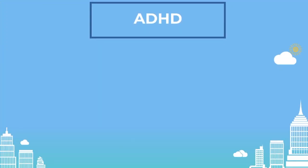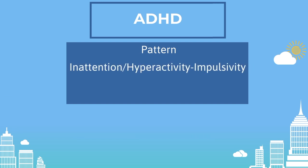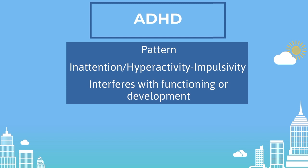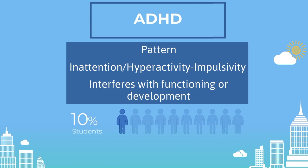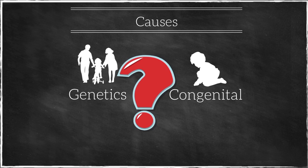First, let's take a look at ADHD. ADHD is defined by the American Psychiatric Association as a persistent pattern of inattention or hyperactivity-impulsivity that interferes with functioning or development. According to the Centers for Disease Control, each classroom typically has one to two students diagnosed with ADHD or presenting problems relating to ADHD, making it one of the most common barriers to learning. ADHD typically shows a correlation with genetic disorders as well as congenital disorders, but causes are still not completely understood.